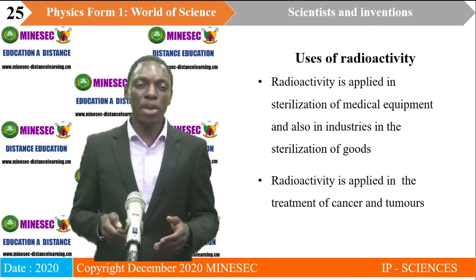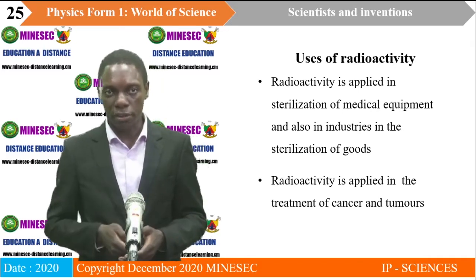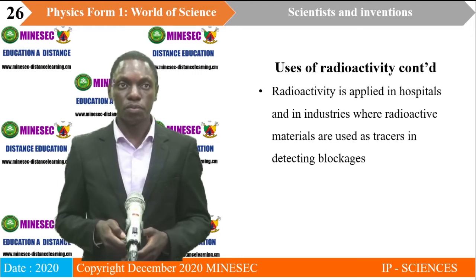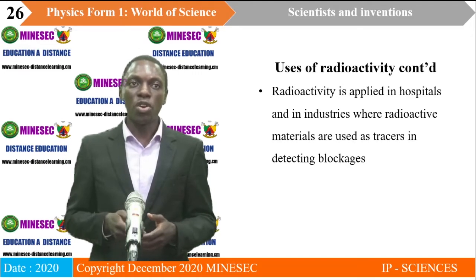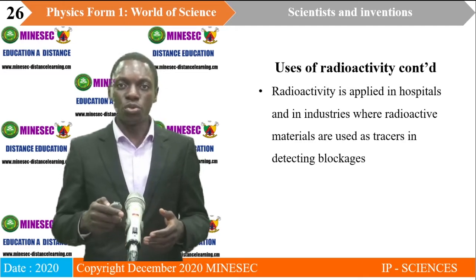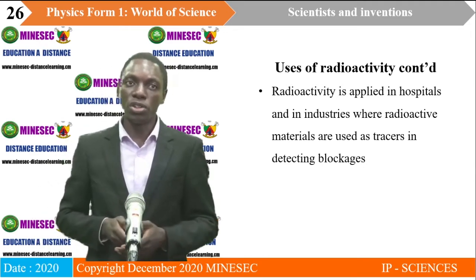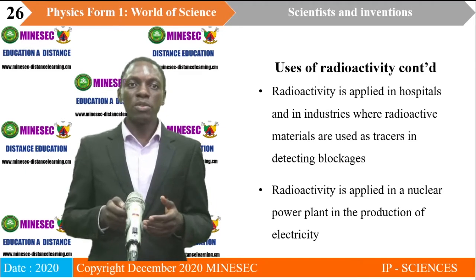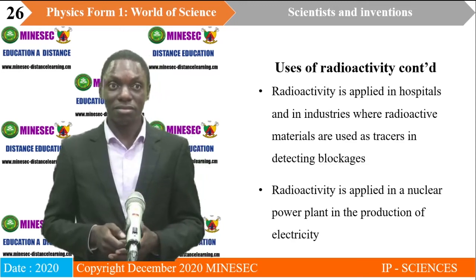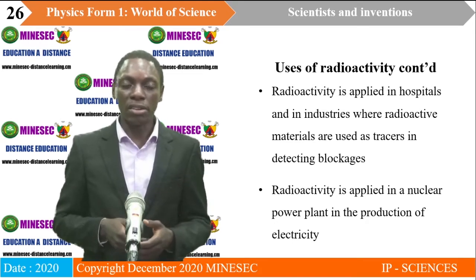Radioactivity is applied in the treatment of cancer and tumors. Cancer is the abnormal growth of cells which can spread from one part of the body to another, while a tumor is abnormal growth that cannot spread. Radioactivity is also used as tracers in hospitals and industries to detect blockages — radioactive materials are sent through channels and their movement is monitored to determine whether there is a blockage. Additionally, radioactivity is applied in nuclear power plants for the production of electricity, though here in Cameroon we produce electricity using hydroelectric power plants.